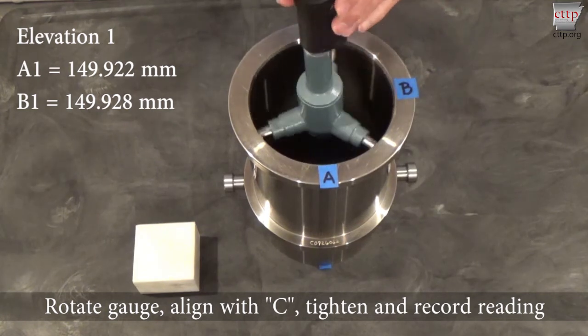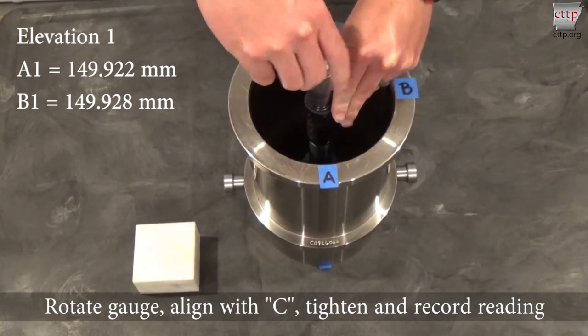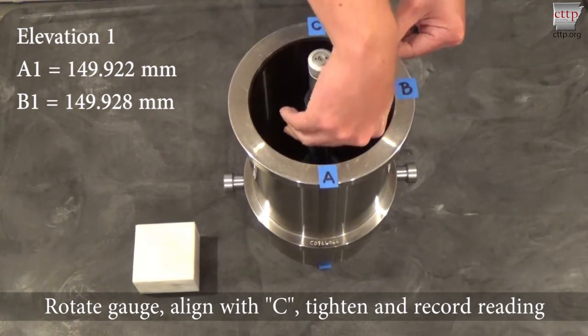Rotate the bore gauge and align the arm with position C. Tighten the bore gauge, record the reading, and then loosen and remove the bore gauge from the mold.